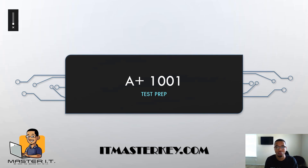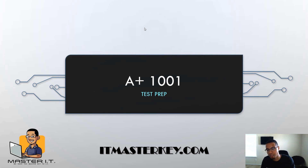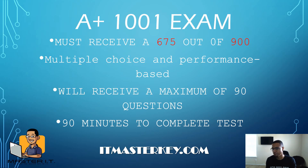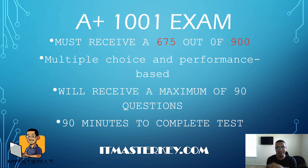Hey gang, let's get straight into it. So we're going to talk about the A+ 1001 exam. To pass the exam, you need 675 out of 900. Every CompTIA test is going to be out of 900, except CAS+, which is way down the line for you guys.